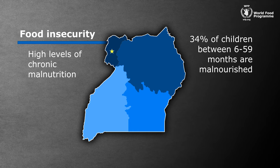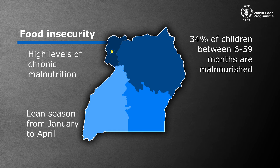The food security situation in Vamistan varies greatly according to season. The most difficult part of the year is the lean season, from January to April, when households are waiting for the winter harvest. During this time, many poor households struggle to pay for their basic food and non-food needs. Households who rely on markets to access food, such as those in urban areas, are affected by higher food prices and lower levels of remittances.